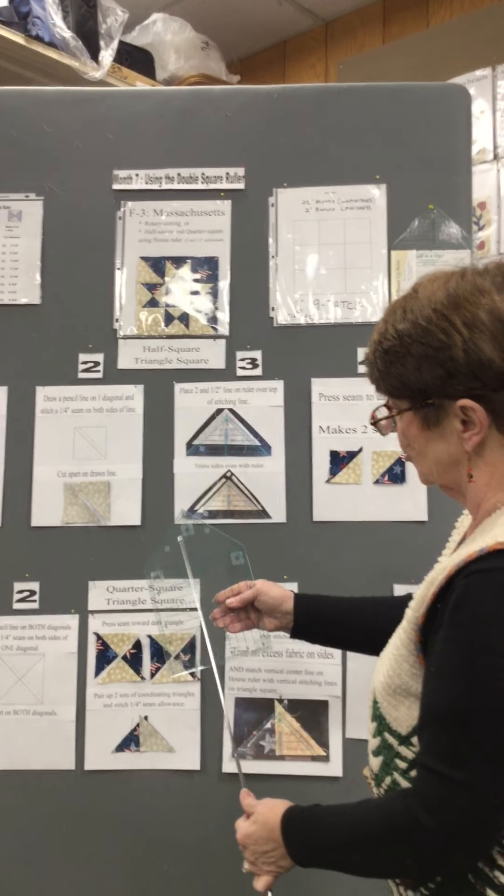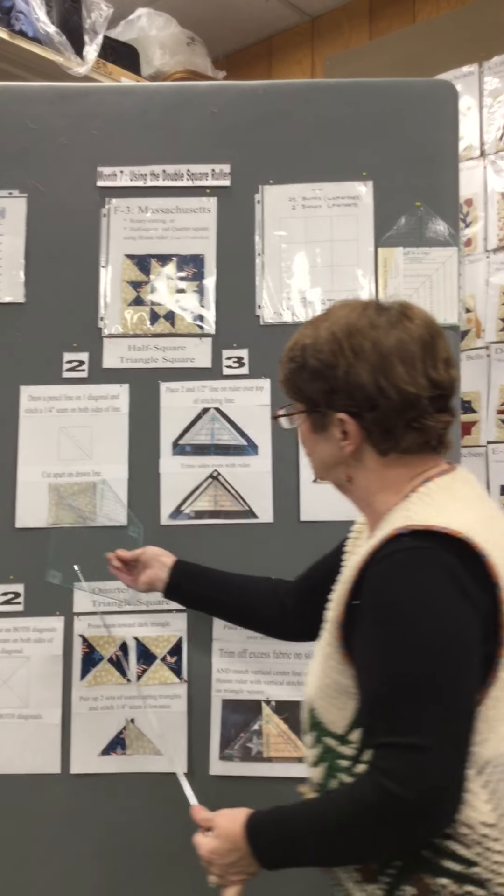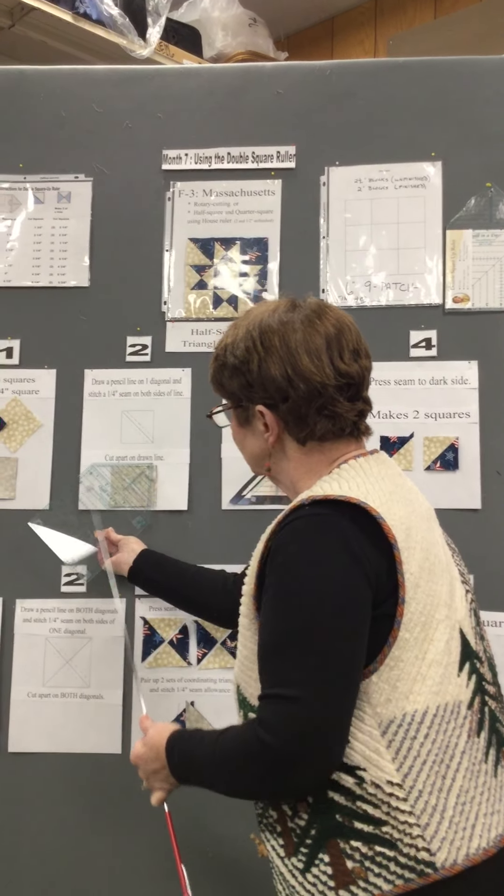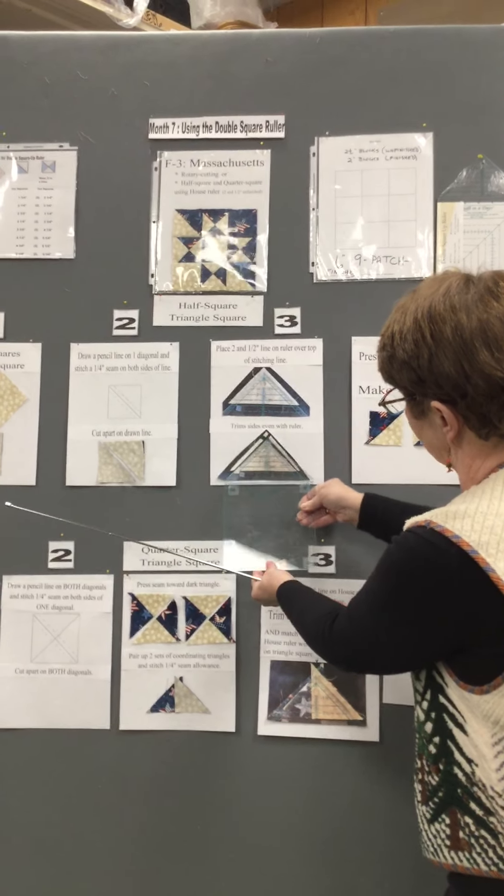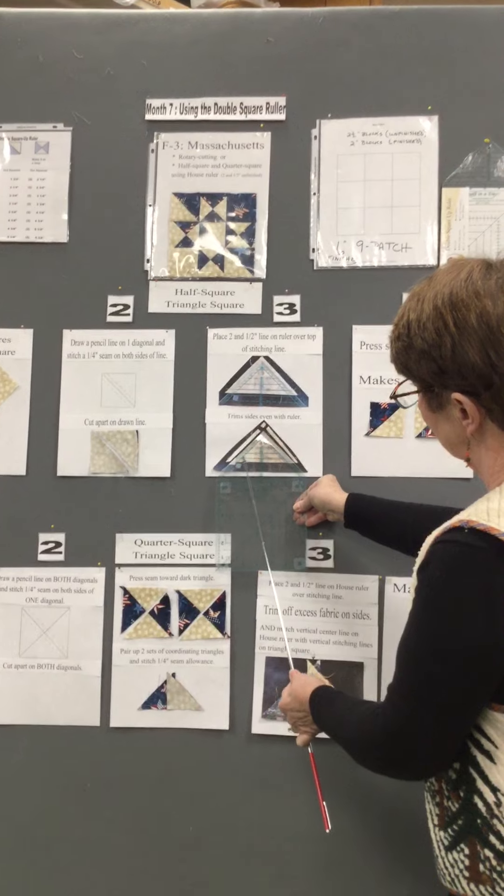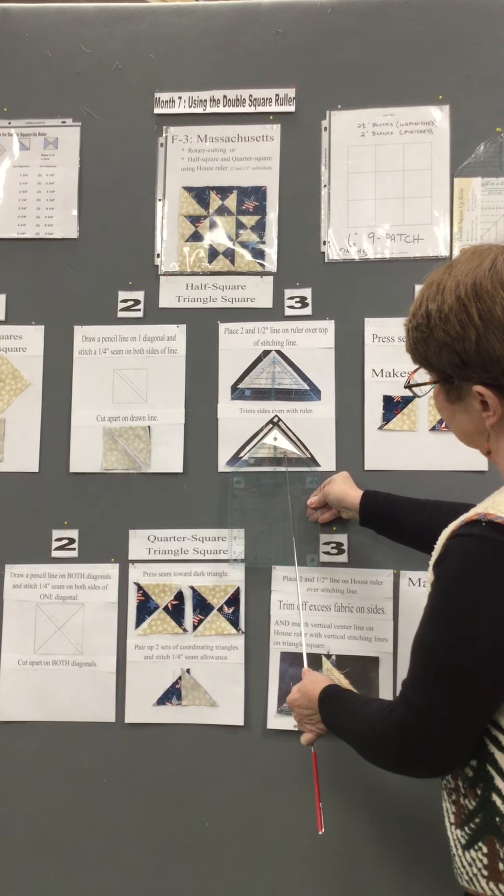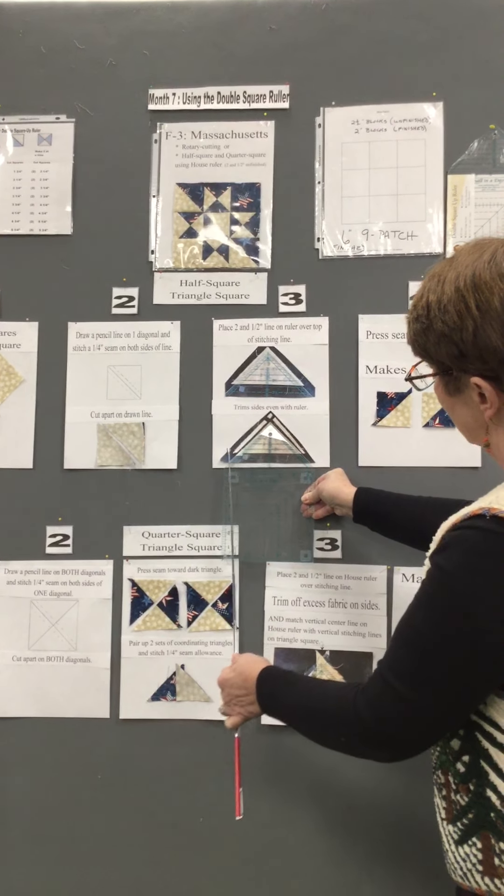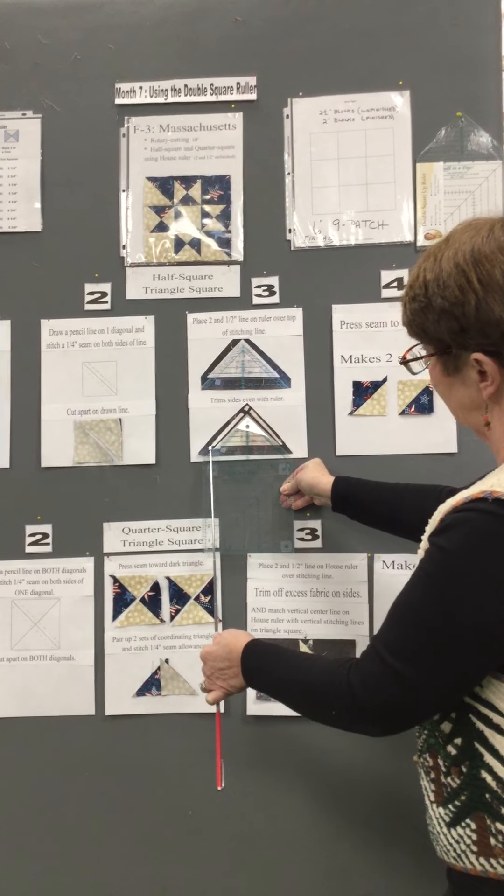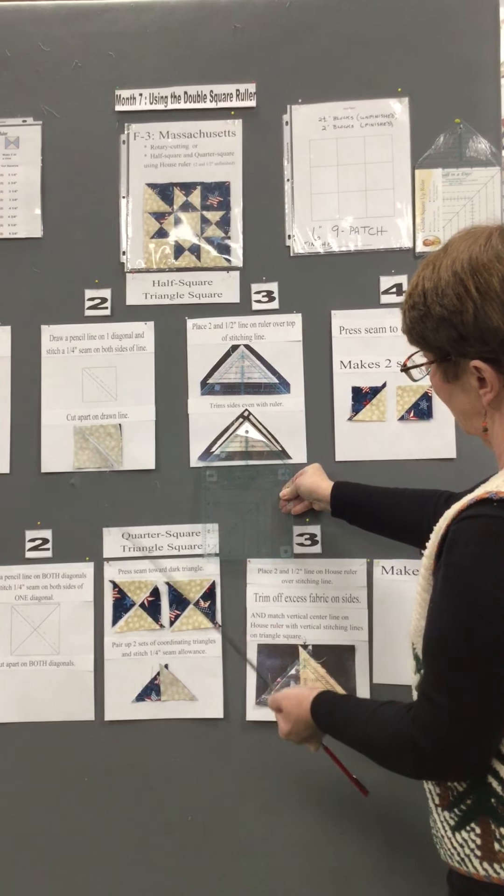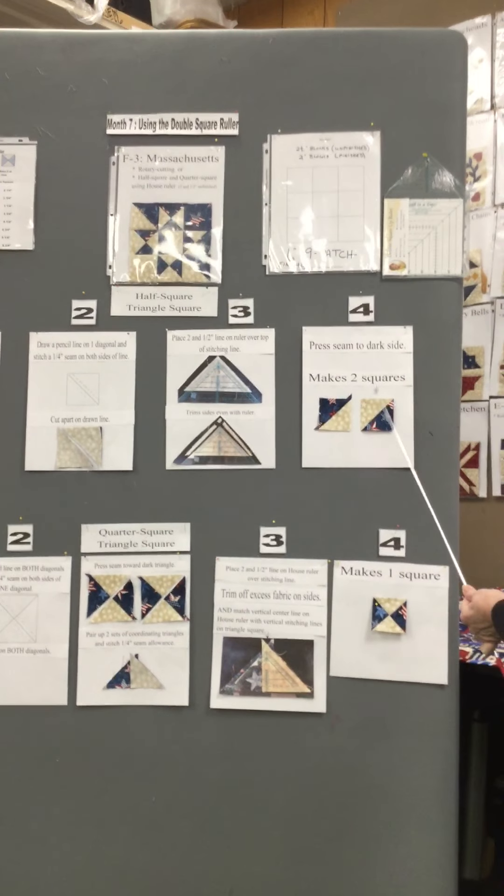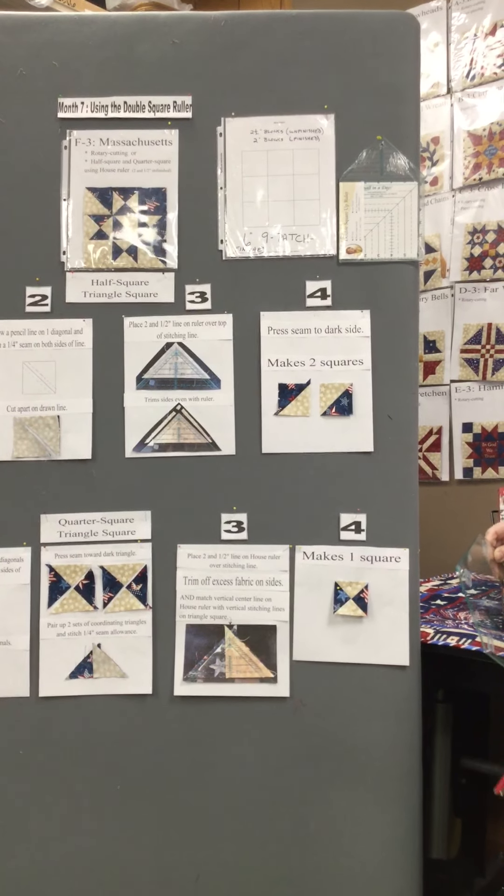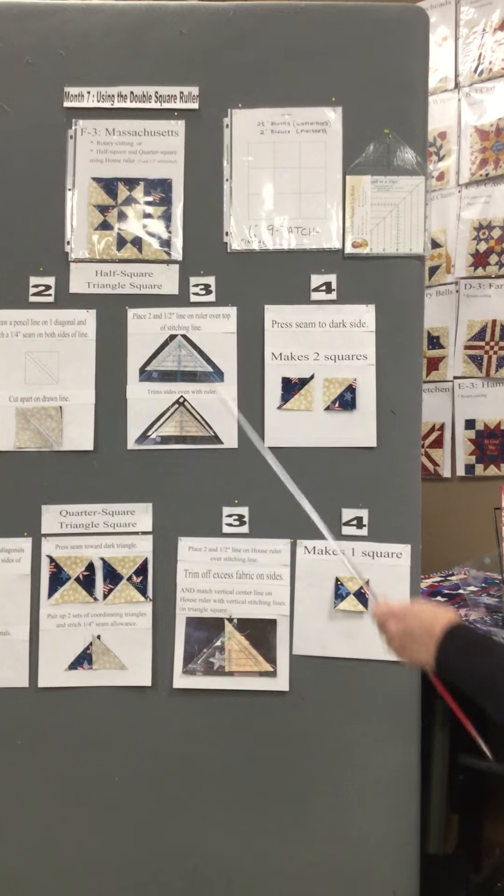You find the two and a half on your square up ruler and you put the two and a half right on your stitching line. I have the better diagram right here. When you put the two and a half inch stitching line on top of the two and a half inch ruler and make sure that it's kind of in the center, all the extra fabric goes right away. What happens now when you press that open, you've got a perfect two and a half inch square to sew into your nine patch block.